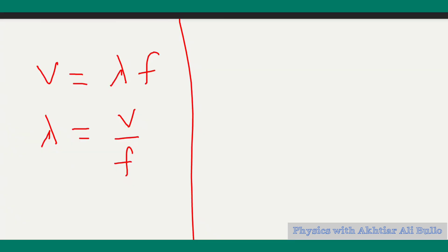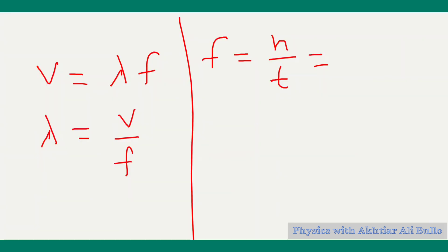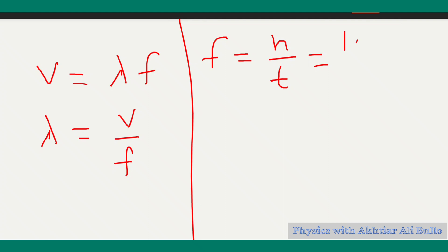Frequency equals the number of vibrations divided by time. The number of vibrations is 10 and time is 1 second, so 10 divided by 1 equals 10 Hertz. Therefore, frequency is 10 Hertz.